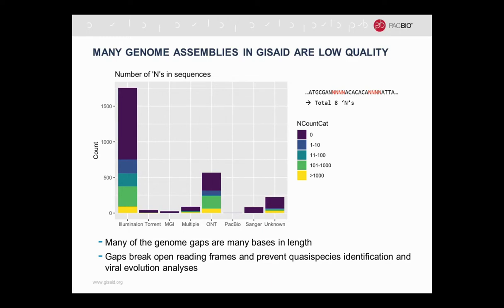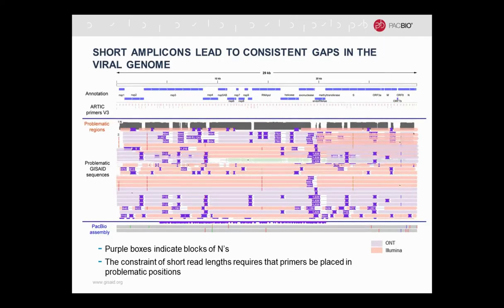Here's another way to look at that same quality value. We've counted the number of Ns in each of these sequences, and you can see that not only are there many gaps, but some of these gaps are very long. For example, in light green here, these are gaps that are over 100 Ns in length. There's actually quite a lot of missing information for most of these genomes. In contrast, the two PacBio genomes that have been submitted have no Ns or gaps at all — they're continuous and cover the entire viral region. If you align a lot of the sequences from ONT or Illumina, you'll also see that there are problematic regions where there are consistently gaps across all different assemblies. One reason this may be happening is that if you are constrained by using short amplicons, you have a lot less flexibility in where you park the primers, and those primer locations may not be optimal.